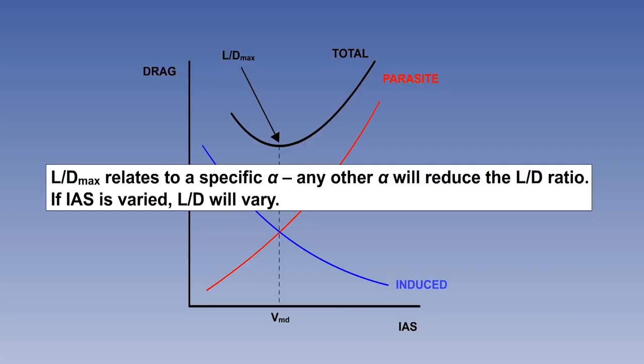It is worth noting that if an aircraft is operated at the LD max angle of attack, drag will be at a minimum while generating the required lift. Any angle lower or higher than that increases the drag for a given lift force. More drag requires more thrust, which is inefficient and costly.